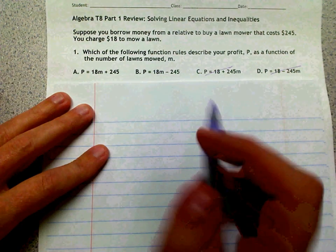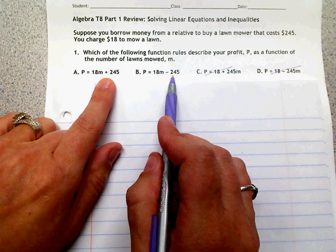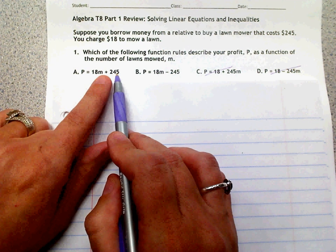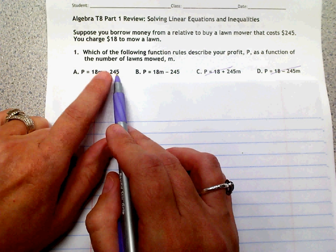All right, so now we're down to looking at the difference between these two. This is plus $245 and this is minus $245. Now this plus $245 means that he's getting this money. This is part of his profit, $245.